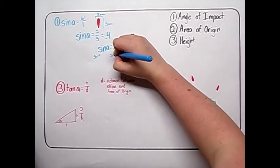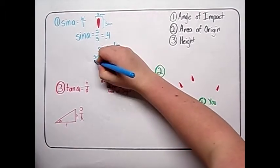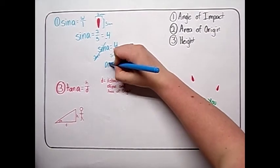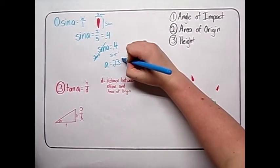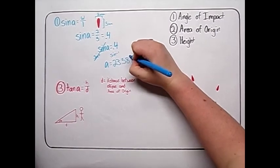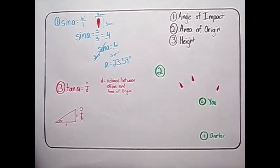You are now left with A equals inverse sine of 0.4. The inverse sine of 0.4 is 23.58. Therefore, 23.58 degrees is the angle at which the cranberry sauce hit the ground. Good job.